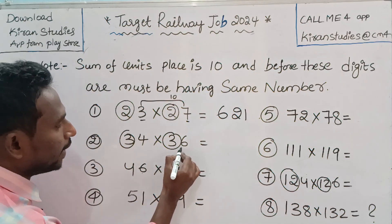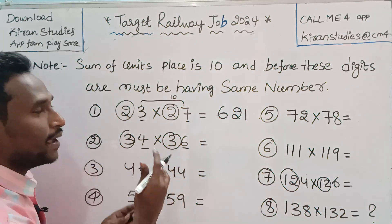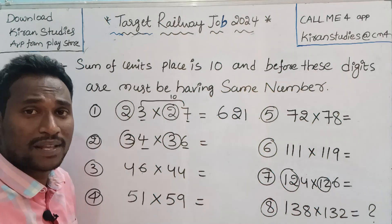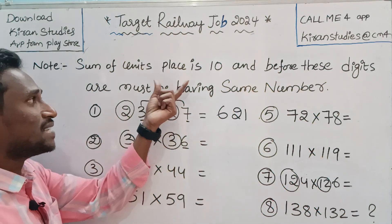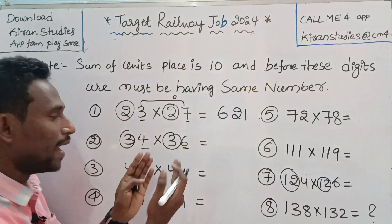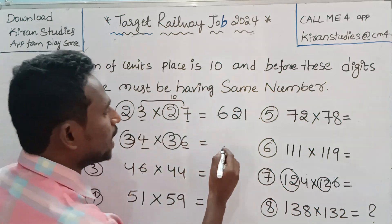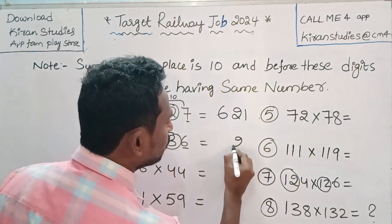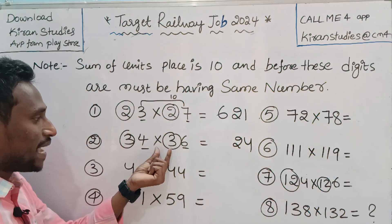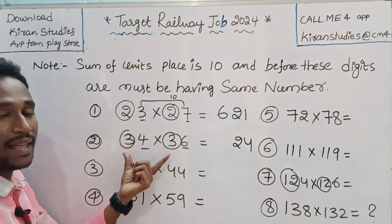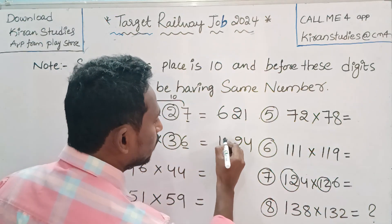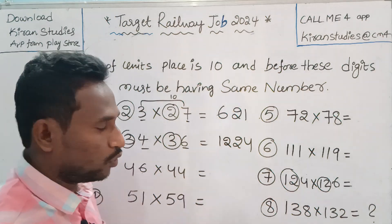Next question. Here we have 6 and 4. Units place: 6 plus 4 equals 10 — rule is satisfied. So we multiply: 6 times 4 is 24. Then the same number here is 3 and 3. The next number is 3 times 4 equals 12. So the answer is 1, 2, 2, 4 — that is 1224.